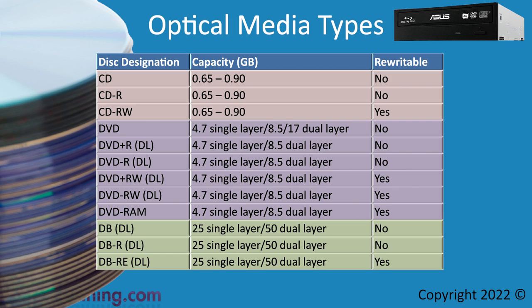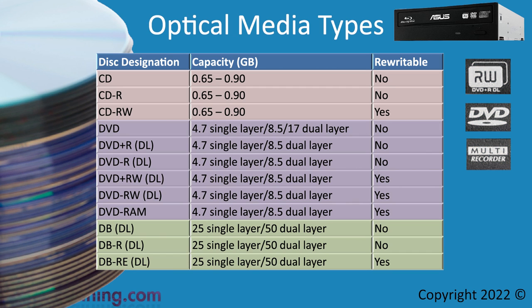That covers the standards for manufactured optical disks. However, there are also standards for burnable optical media. In the case of DVDs, there were a lot of different standards. When you purchase an optical media drive, it will have some logos printed on it that tell you what your optical drive supports. In the old days, some optical media drives would only support particular standards — for example, may have only supported DVD+R and not DVD-R. The difference between the two is how the data is burned to the DVD. Nowadays, since the standards are so old, all optical burners support all the standards.